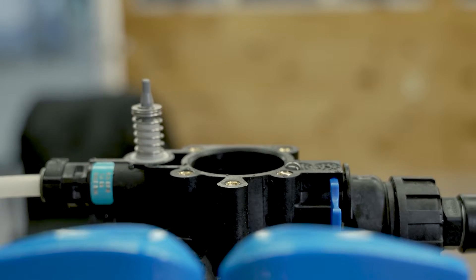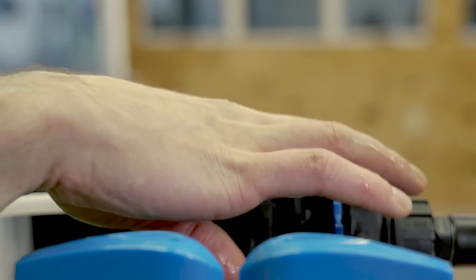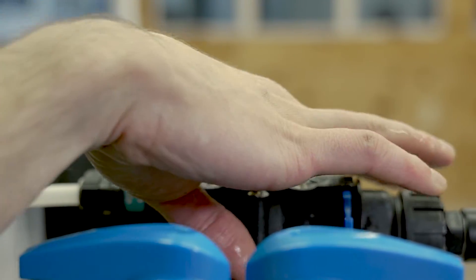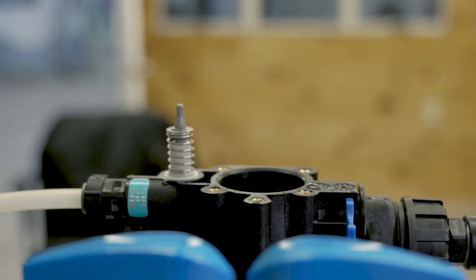When putting the seals and spacers back in, you're going to start with a seal and alternate seal, spacer, seal, spacer. Make sure to put them in one at a time and press down around the outer edge of each seal to make sure that it's seated.